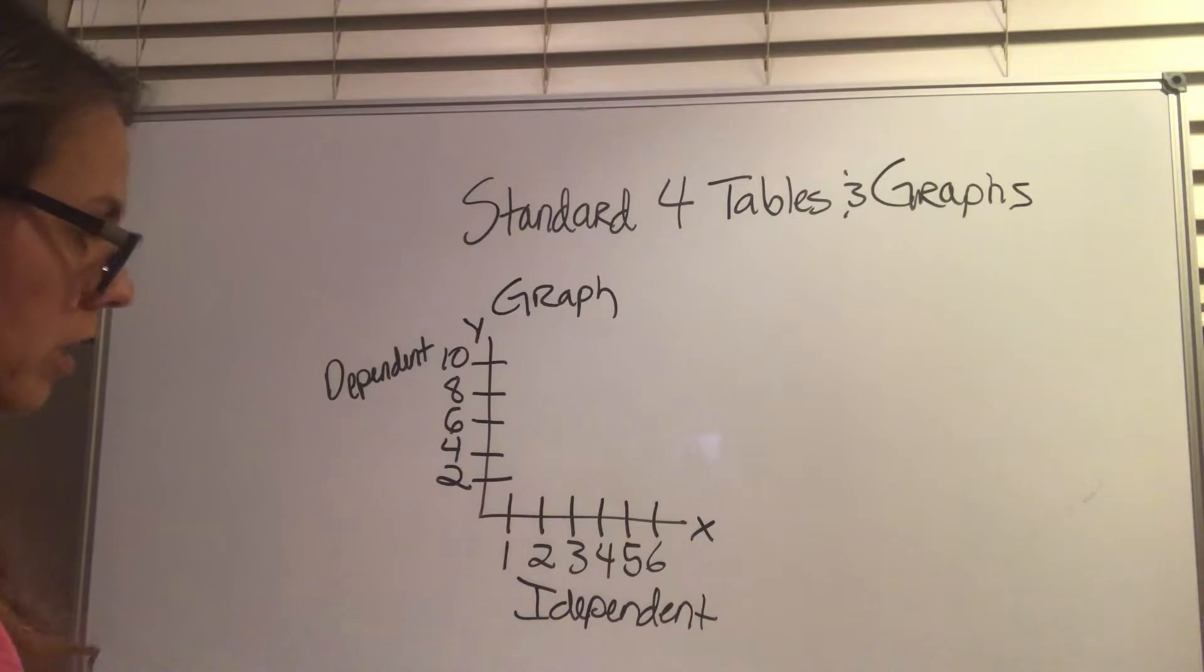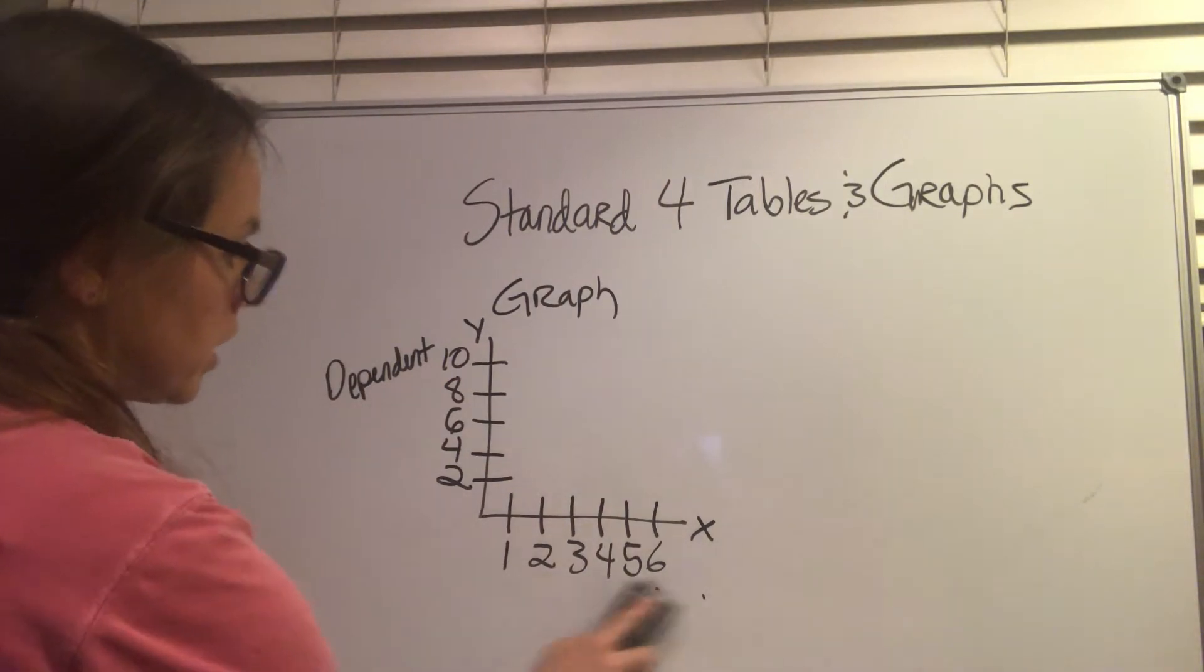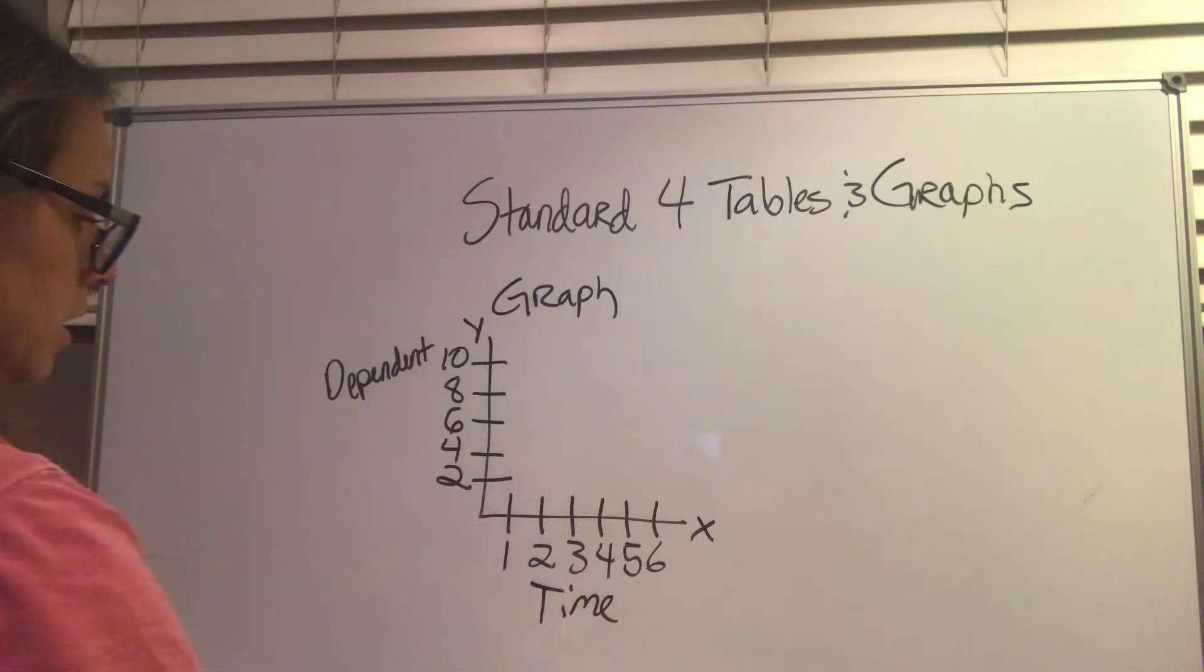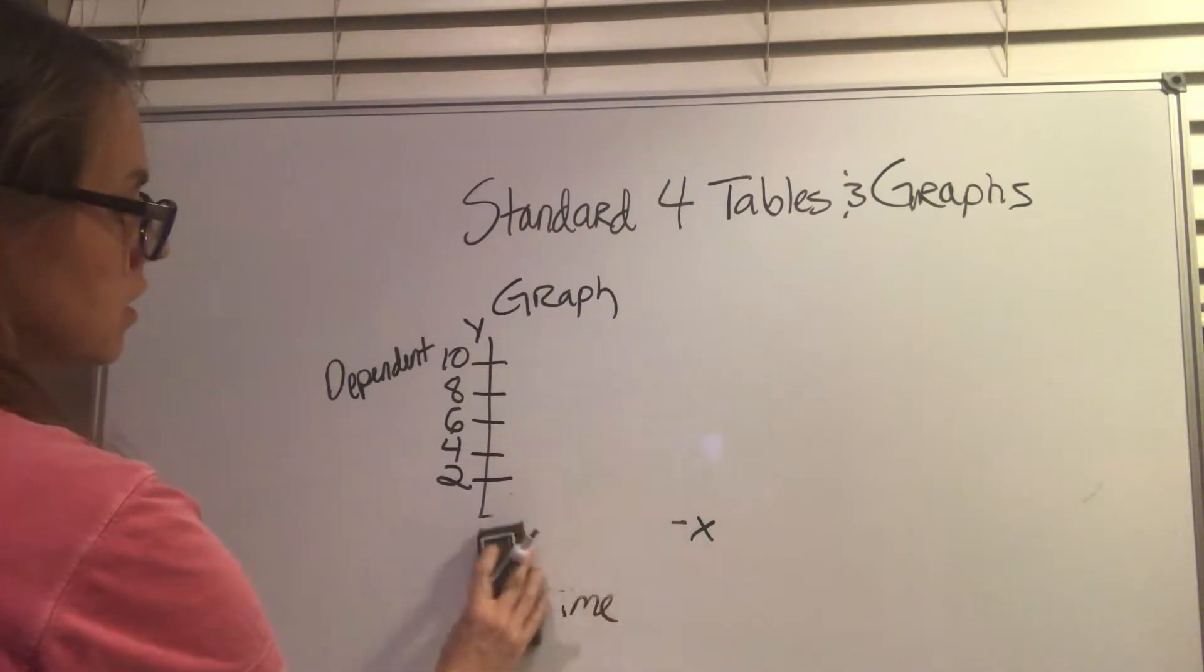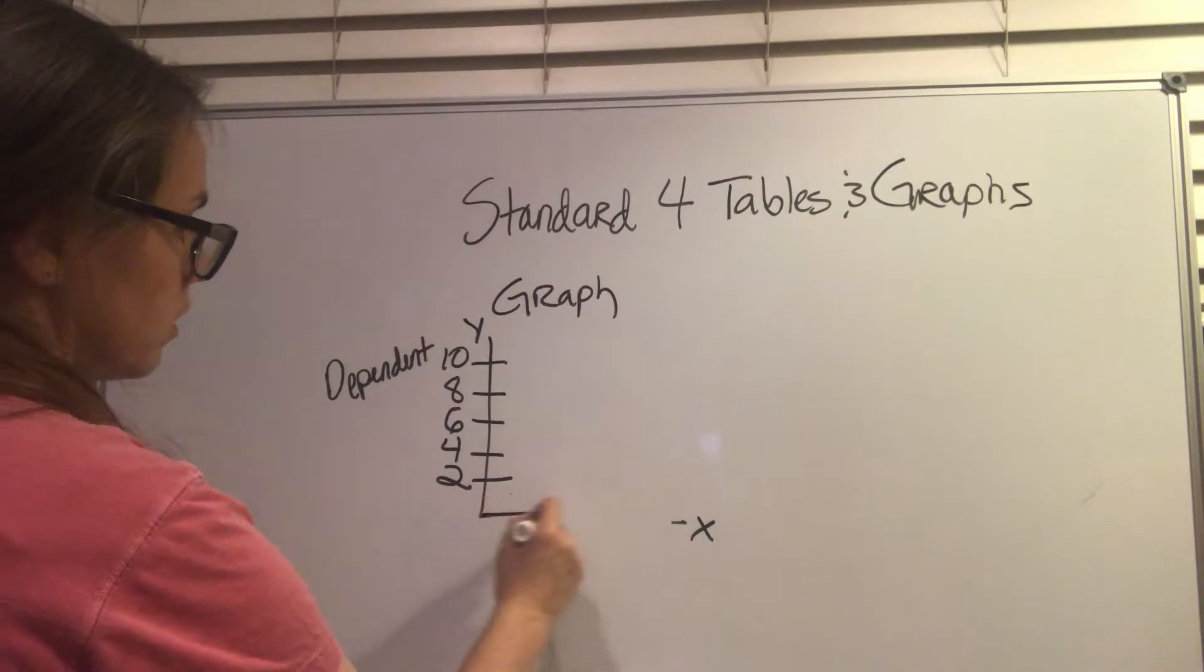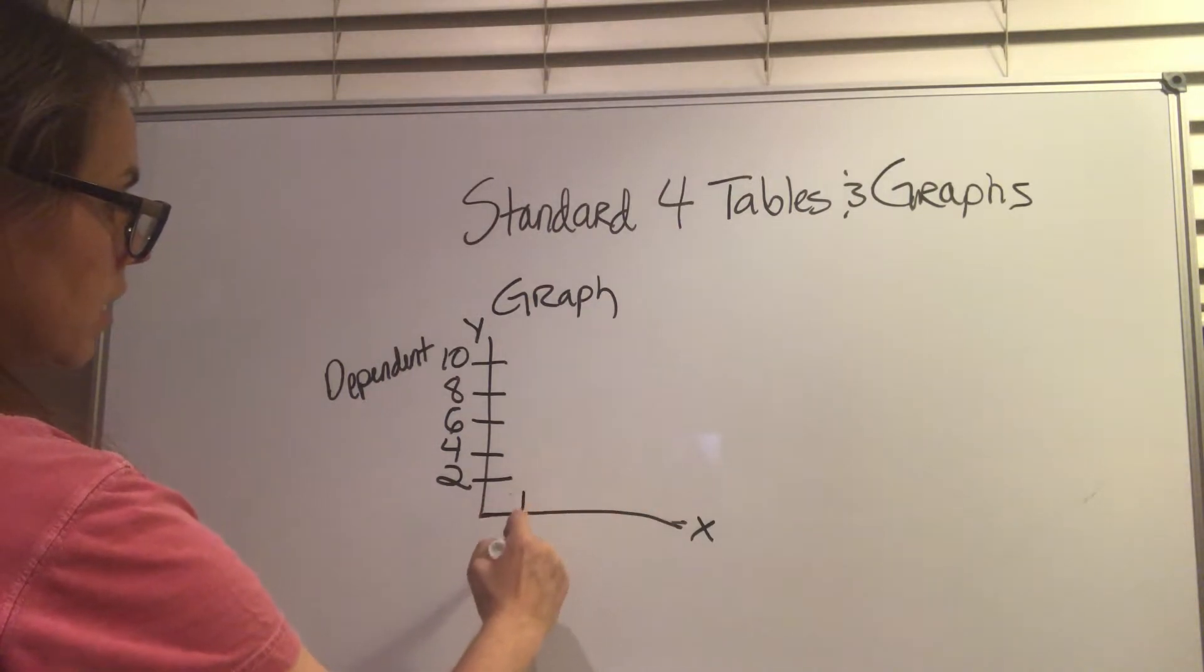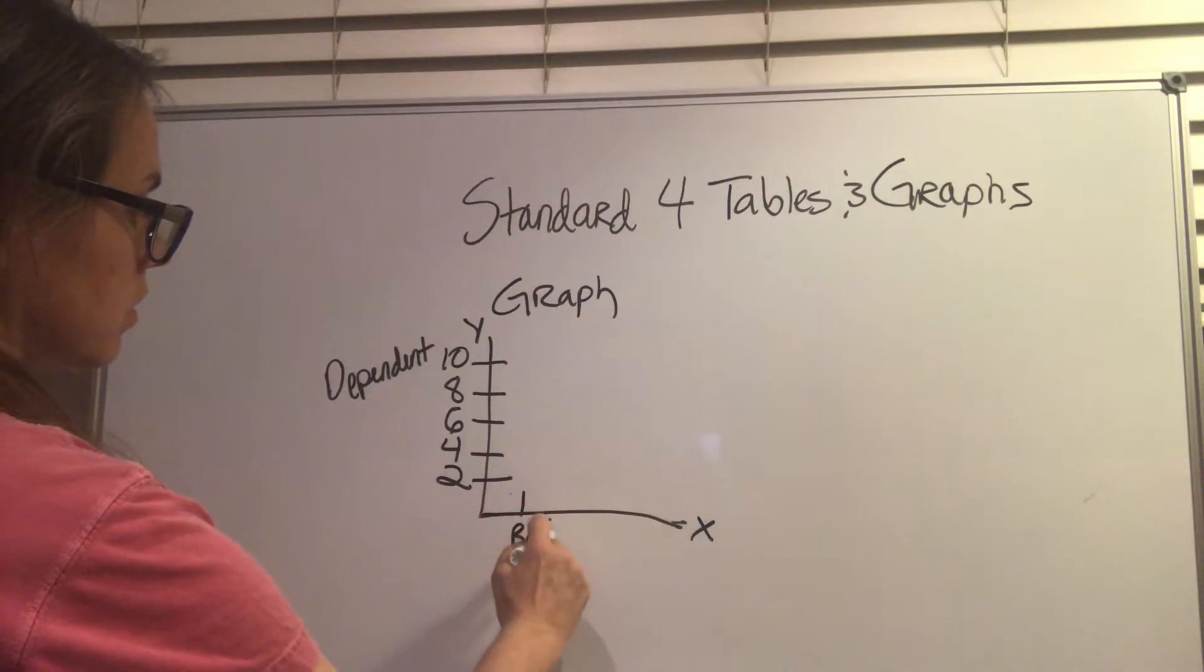You don't label them independent and dependent, you label them with the actual variable it is. So if this is time, or like in our last experiment, we didn't use hashtags down here because we did a bar graph. We did like before and after.